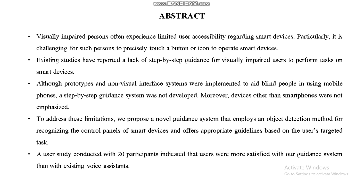Existing studies have reported a lack of step-by-step guidance for visibly impaired users to perform tasks on smart devices. Although prototype or non-visual interface systems were implemented to aid blind people in using mobile phones, to address these limitations we propose a novel guidance system that employs an object detection method for recognizing the control panels of smart devices and offers appropriate guidelines based on the user's targeted task.